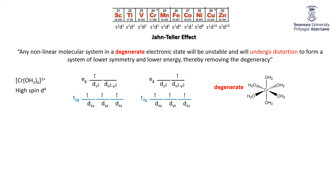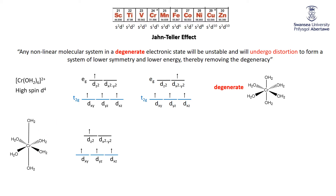What we actually find in real life is that it undergoes distortion to form a system of lower symmetry and lower energy. The distortion is associated with the z-axis: you can have the bonds extending out, moving the axial ligands further away along the z-axis. When those ligands move further away, it stabilizes anything associated with the z-axis, because the ligands are what destabilize the dz² most strongly, and also the dxz and dyz orbitals.